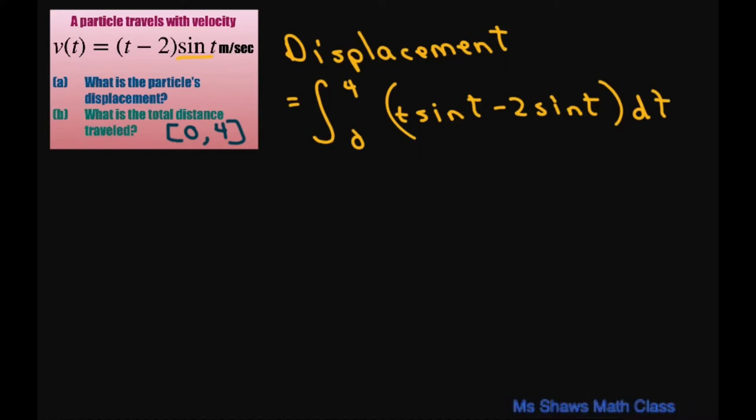And then use the product rule for this, and let's integrate. So we're going to get, this is going to be sine of t minus t cosine of t. And for this piece, it's going to be plus 2 cosine of t.